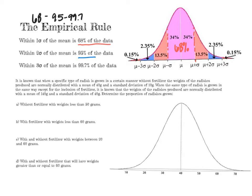Within two standard deviations is 95 percent of the data. We can figure out the smaller pieces inside by doing 95 minus 68, which is 27, then dividing by 2 — that gives us 13.5 percent on each side between one and two standard deviations.